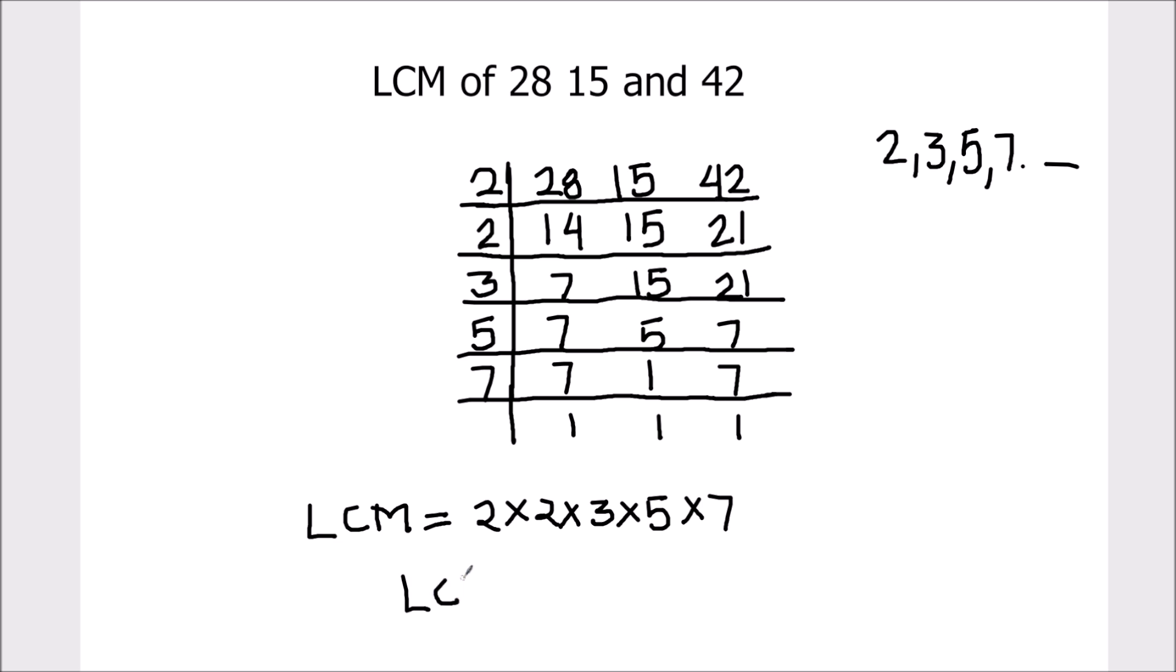Let's find what's the LCM. 2 times 2 is 4, 4 times 3 is 12, 12 times 5 is 60, and 60 times 7 is 420. So the LCM of 28, 15, and 42 is 420.